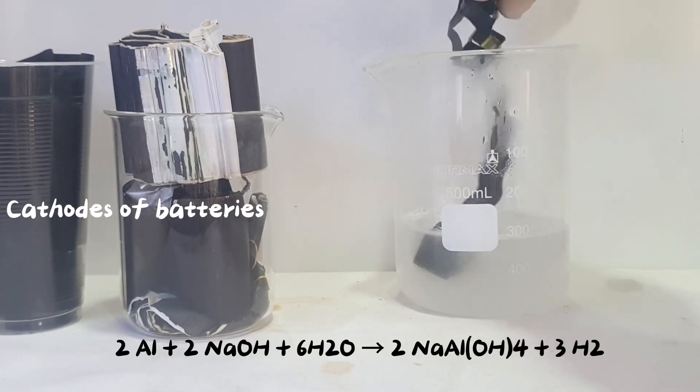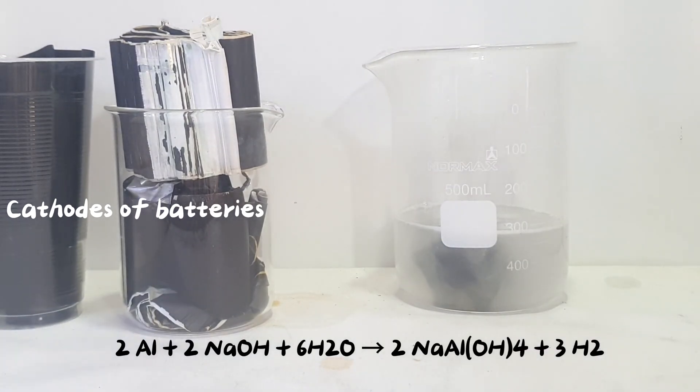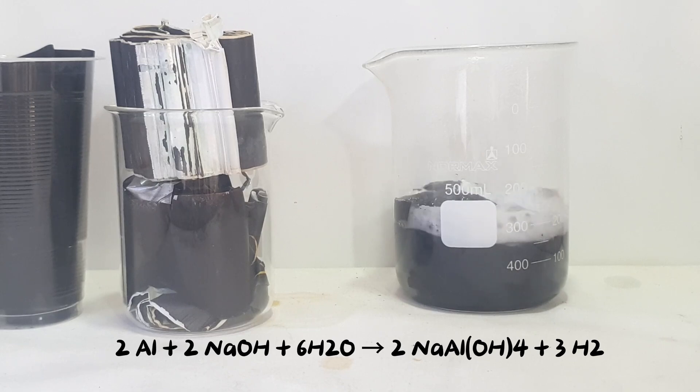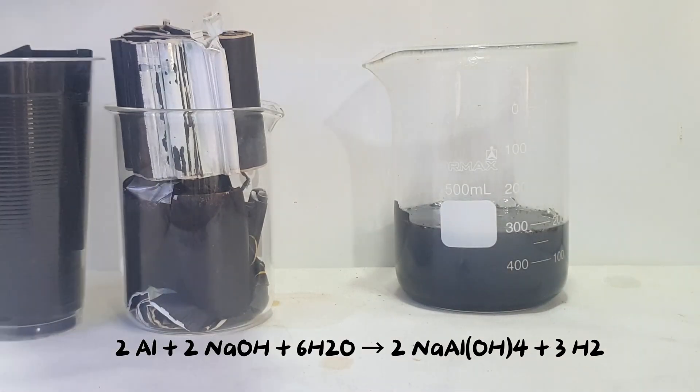When aluminum reacts with sodium hydroxide in the presence of water, it forms sodium aluminate and releases hydrogen gas. This reaction is exothermic, releasing heat and producing flammable hydrogen gas. Proper precautions should be taken to ensure safety during this reaction.